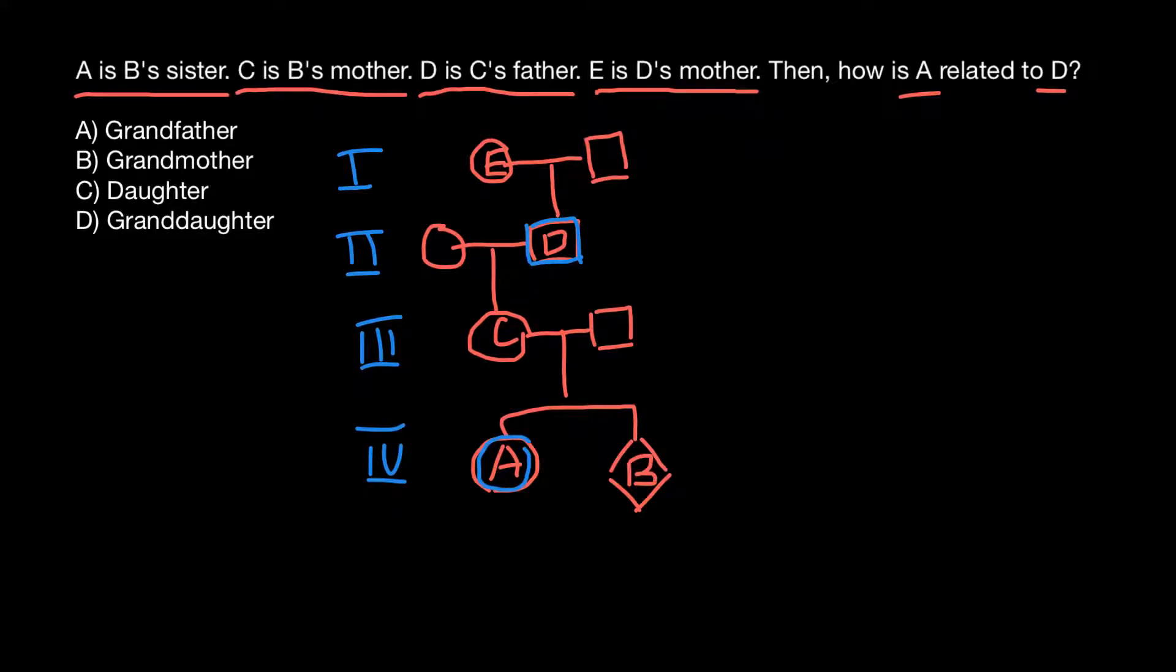As you can see, we have two generations here. So D is going to be the grandfather of A, and A is going to be the granddaughter of D. And this is answer D.